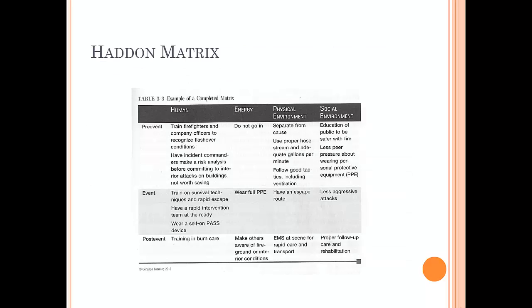The Haddon Matrix uses 12 different areas to determine risk across four categories — human, energy, physical environment, and social environment — and three phases: pre-event, event, and post-event. In the human factor pre-event, do we train firefighters and company officers to recognize flashover conditions? Do incident commanders make a risk analysis before committing to interior attacks on buildings that may not be worth saving? The incident commander may be the first-in captain, not a chief officer — do we prepare those people to make those decisions?